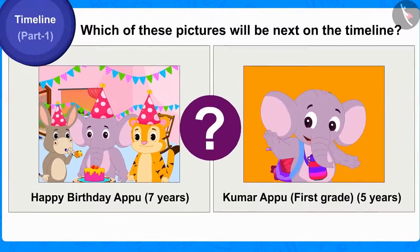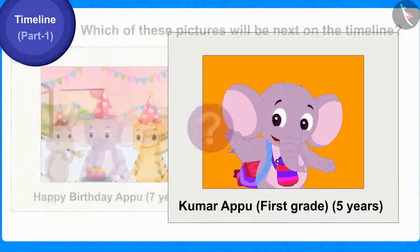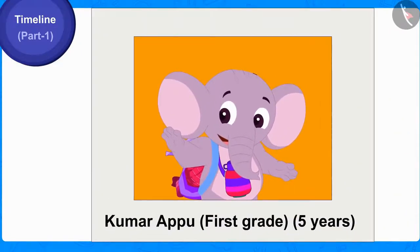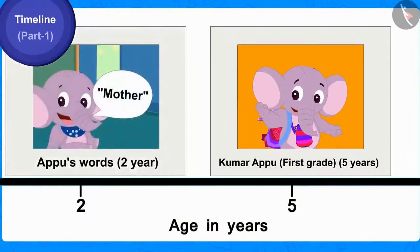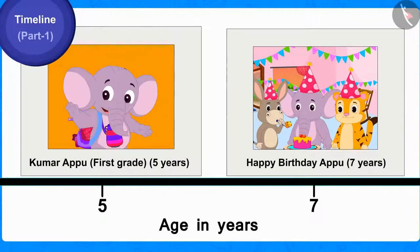And which of these pictures will be next on the timeline? Yes, this picture of Appu, in which Appu was in first grade, will be shown chronologically next on the timeline by writing the age of five years on it. And finally, the picture of Appu's seventh birthday will be shown by writing the age of seven years on the timeline.